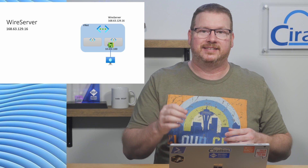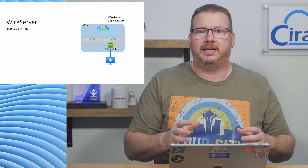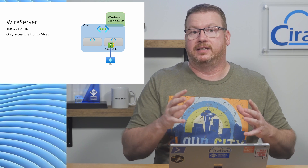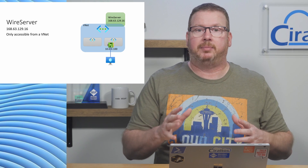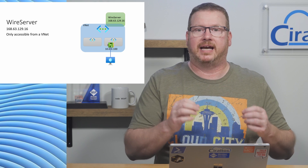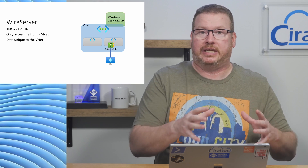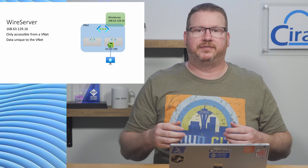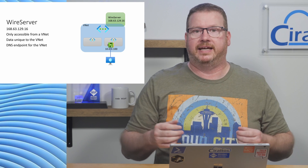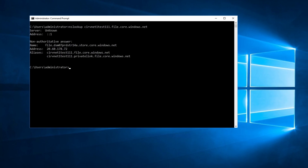The wire server is the IP 168.63.129.16. It's a public IP that's available from every VNet — and only on VNets in Azure. It won't overlap with any private IPs but it's only available from inside an Azure VNet. The wire server data is unique to each VNet. One of the things it does is act as a DNS endpoint for the VNet, including private endpoints on that VNet.